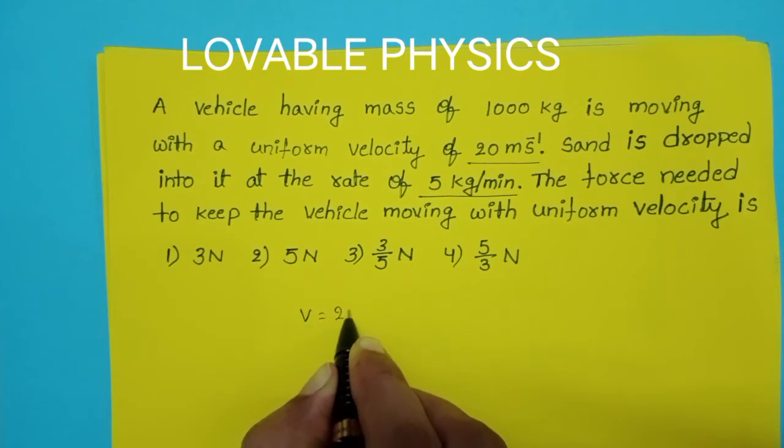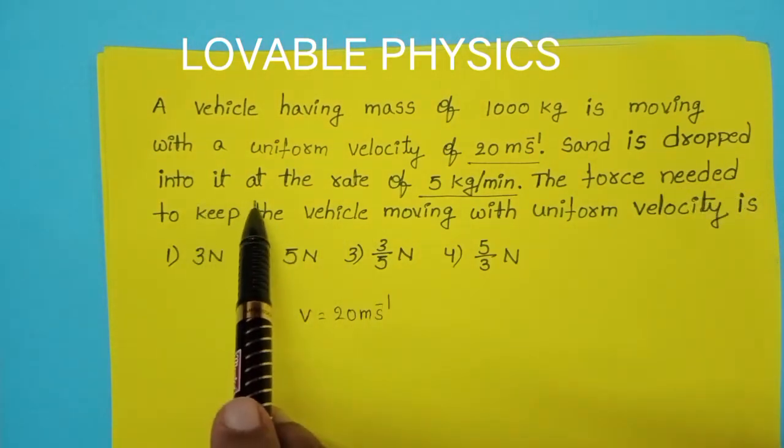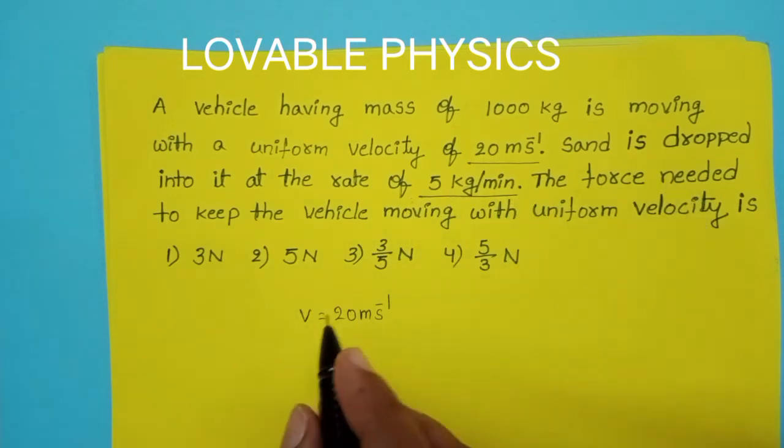V equals 20 meters per second, and sand is dropped into it at the rate of 5 kg per minute.